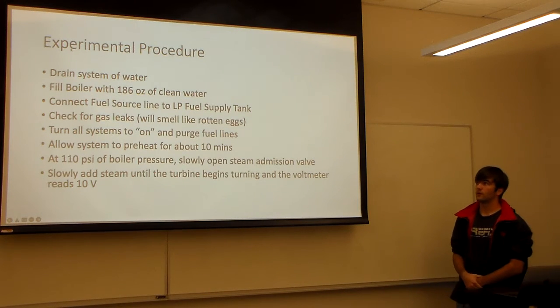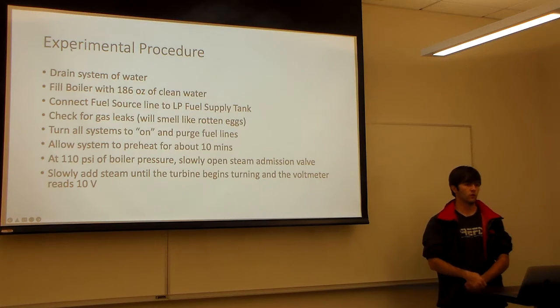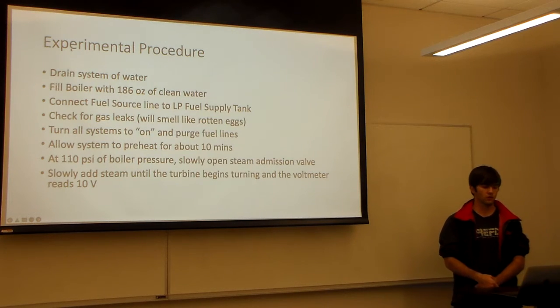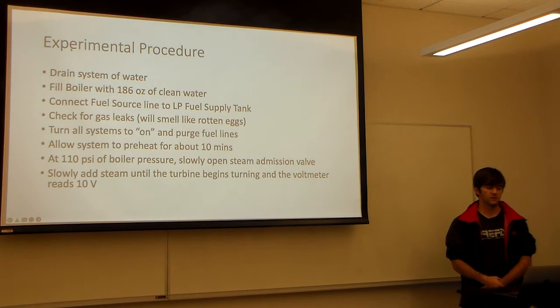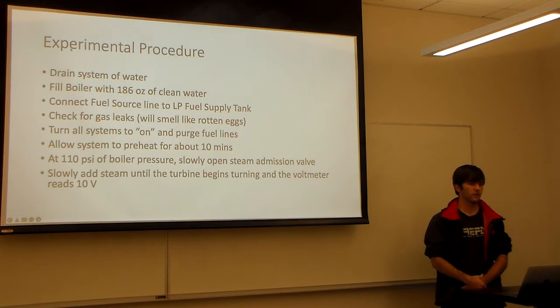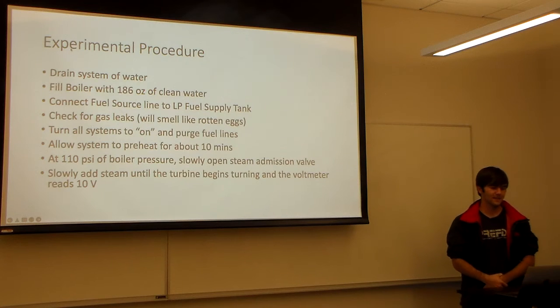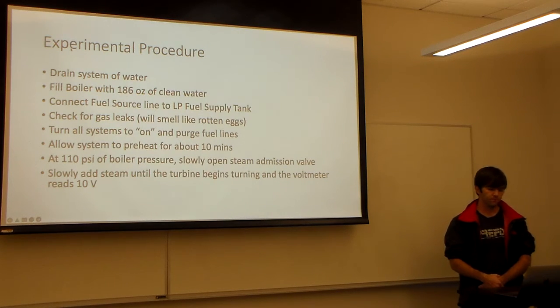Just a generalized experimental procedure. We have to drain the system of water before we start so we know how much water is in it. We fill the boiler with 186 ounces of clean water. We connect the fuel source line to the fuel supply tank. We check for gas leaks to make sure we're not about to blow up everybody. And then we turn all systems to on and purge the fuel lines and allow the system to preheat for about 10 minutes to make good quality steam.